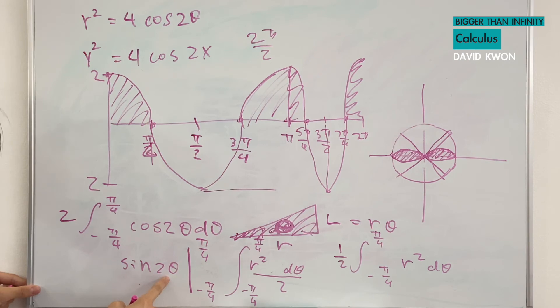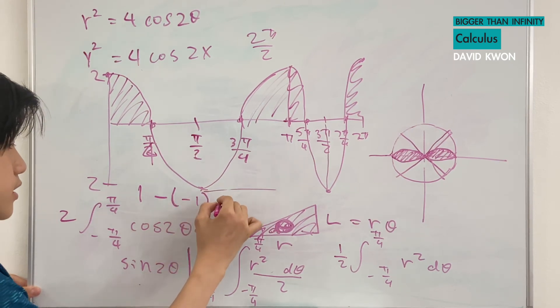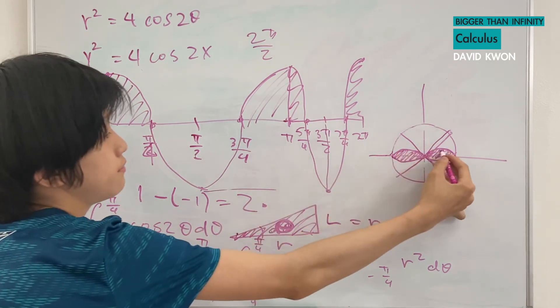And then, putting it there, we get sine π over 2. Sine π over 2, that's 1, minus sine negative π over 2 is negative 1. And that is equal to 2. But that's only one side of this.